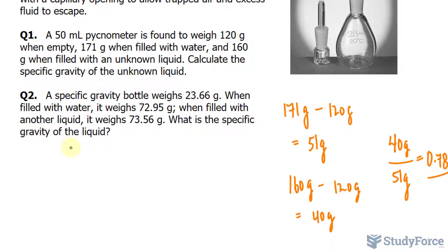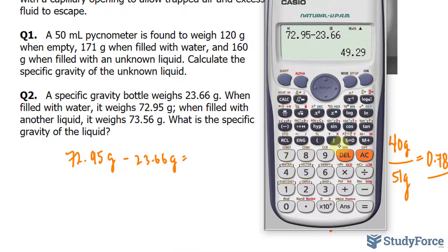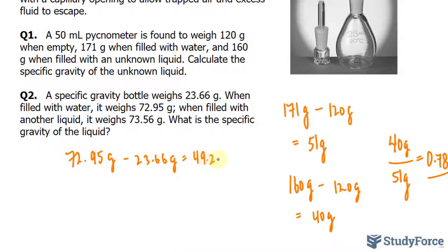So let's go ahead and subtract 72.95 grams, that's four significant figures, with 23.66 grams. This will give us the weight of the water. 72.95 minus 23.66, the answer is 49.29. So that's the mass of the water.